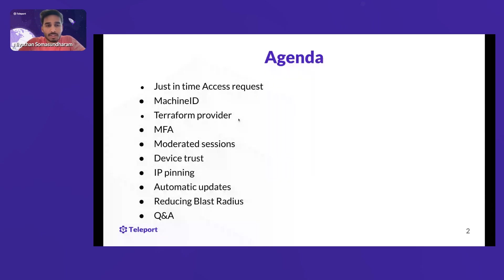We'll look at some key features: just-in-time access requests, Machine ID, the Terraform provider, MFA, how to join sessions, device trust and IP pinning, automated updates, and lastly some security practices — like how to reduce the blast radius in terms of attacks and vulnerabilities. We can also cover some Q&A at the end.